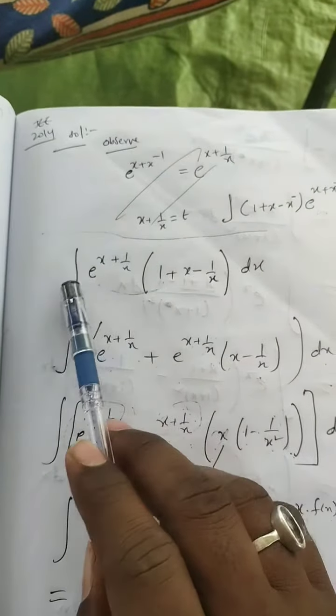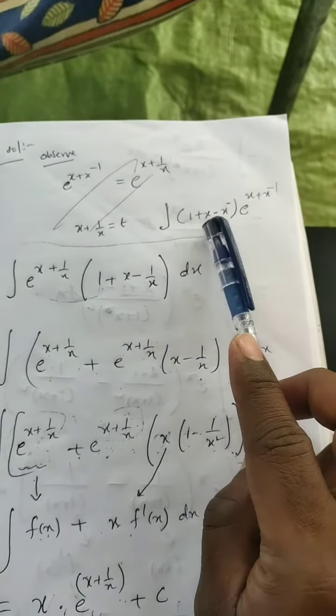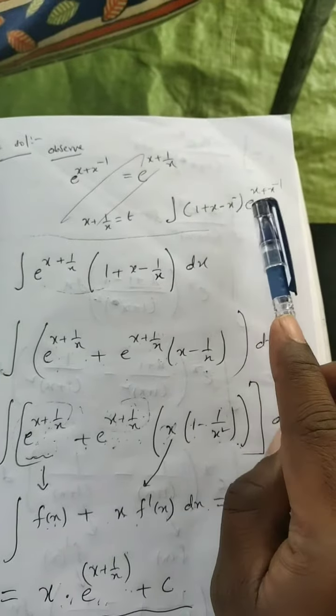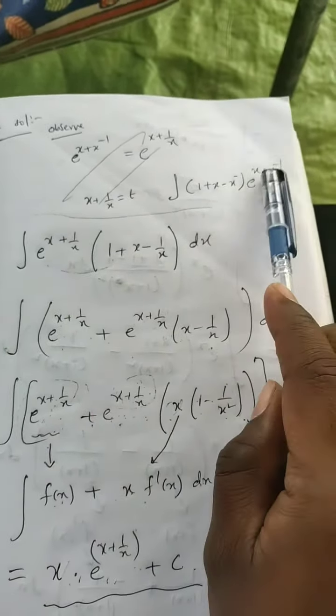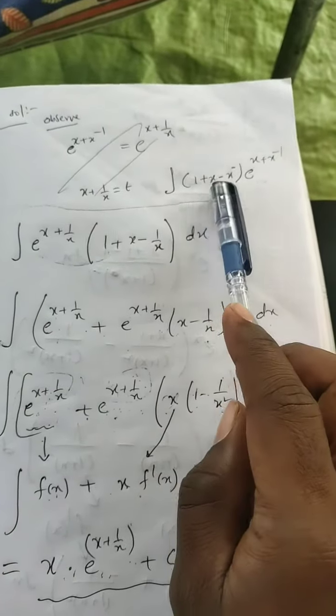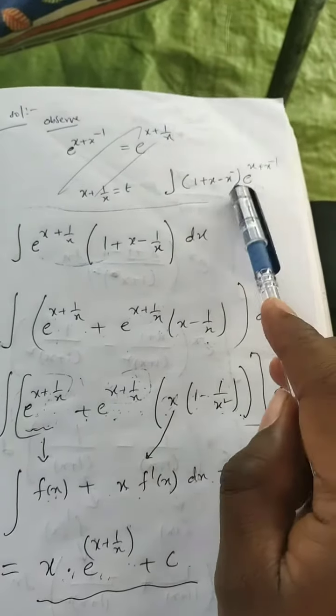Let us solve this by parts. You have the question: integration of (1 + x - x^(-1))e^(x + x^(-1))dx. So you can write this as e^x plus 1/x under bracket (1 + x). This x^(-1) I can write as 1/x dx.